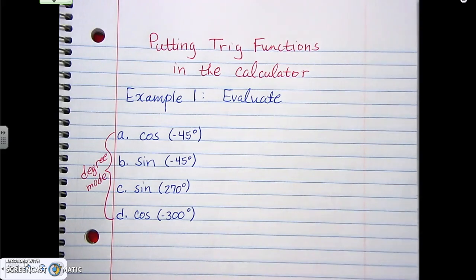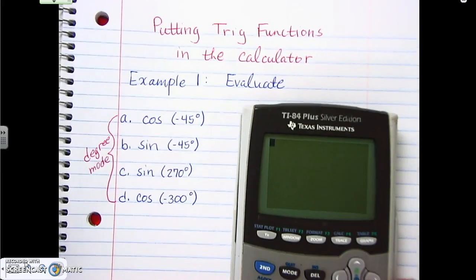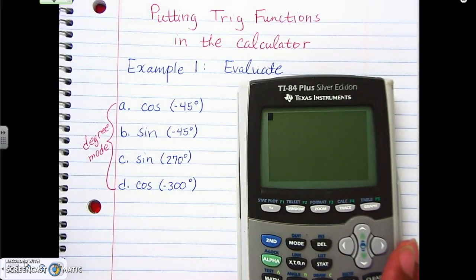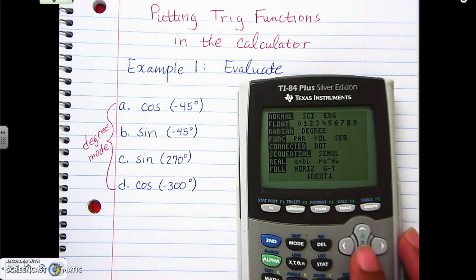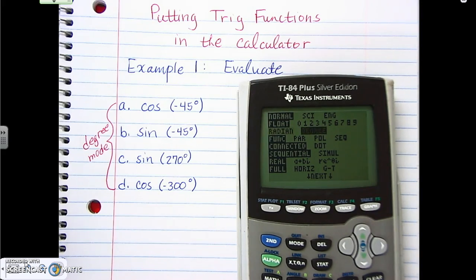So it's degree mode. When we do this in our calculator, we need to make sure we're in degree mode. So we go ahead and turn on the calculator. To make sure that we are in the right mode — and again, we're in degree mode because it's degrees — you hit the mode button. We go down until we see radian and degree. It all depends on what was last used in your calculator. My calculator is in radian mode, so I need to change mine to degree mode. So we go over to degree, hit enter, and it changes over to degree mode.